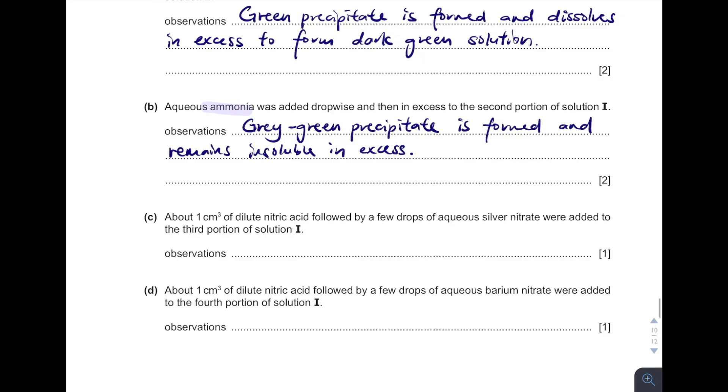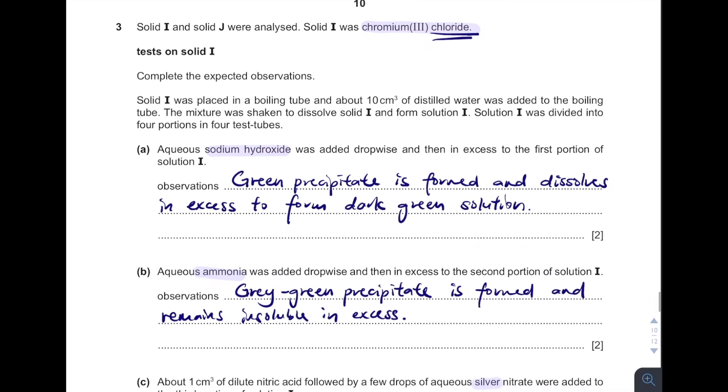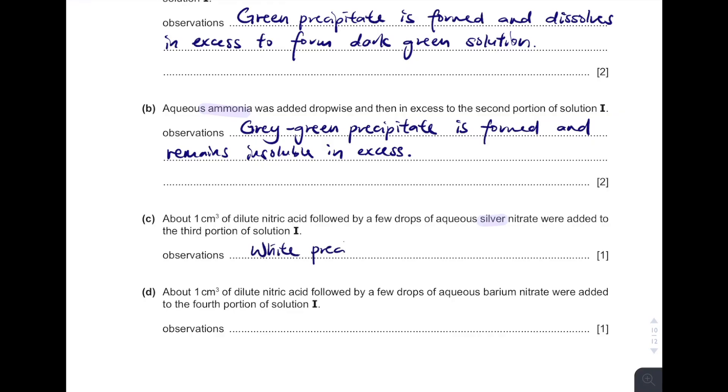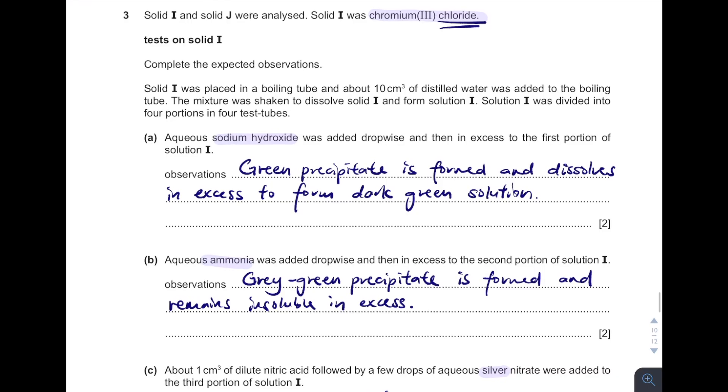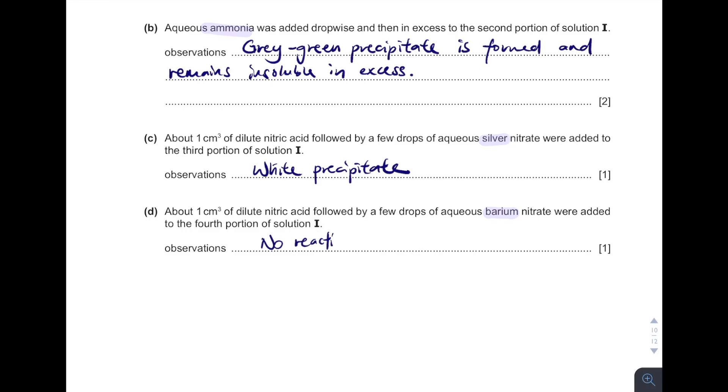Next one, see, added with silver. Remember, whenever you see the word silver solution, 100% they are testing for the presence of halide ions. So you see, is there any halide? That's chloride, isn't it? So it forms silver chloride with the observations of white precipitate is formed. And then next one, it's tested with barium. Same thing. Whenever you see the word barium, 100% they are testing for sulfate. Is there any sulfate ions here? No. There is no sulfate. So answer, no reaction or no change. Either one will do. Which means nothing will happen at all.